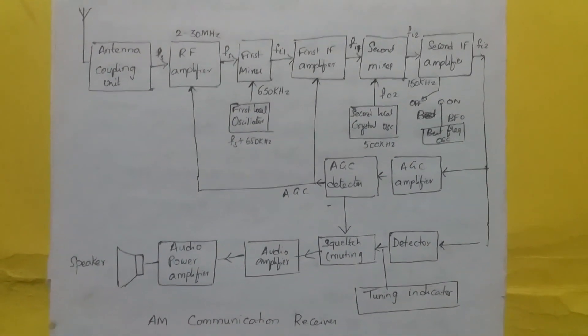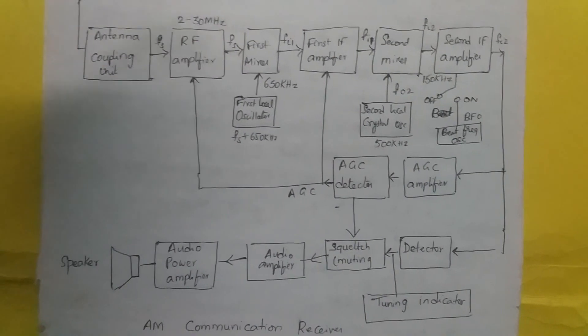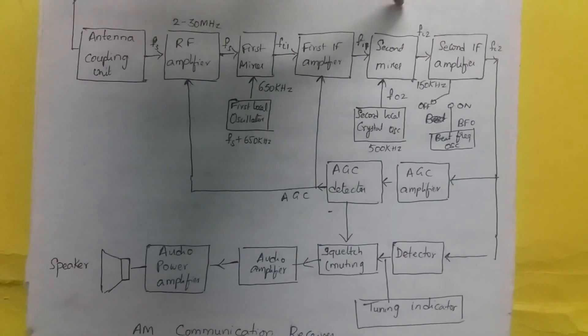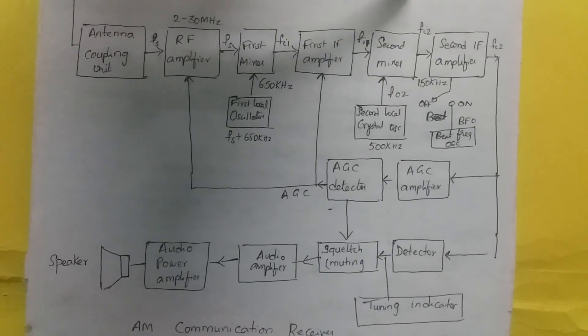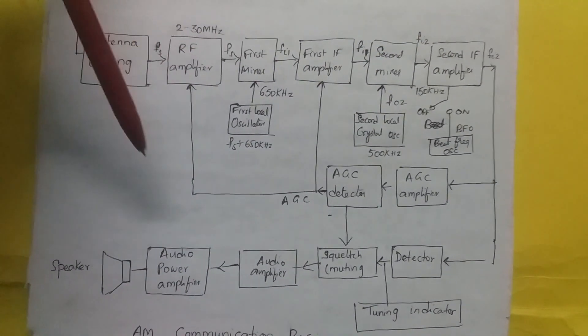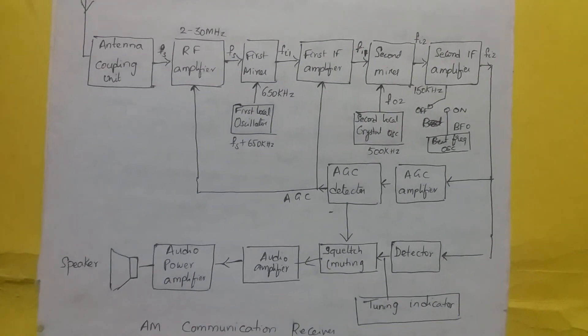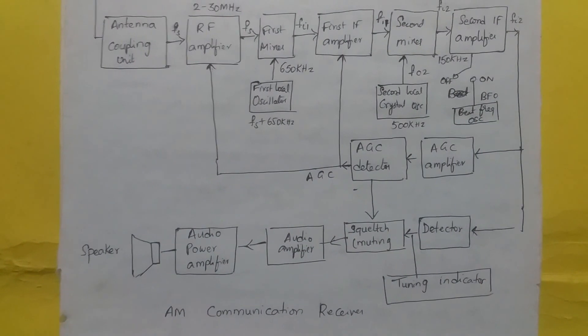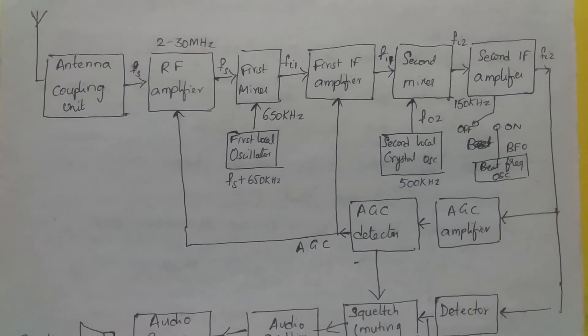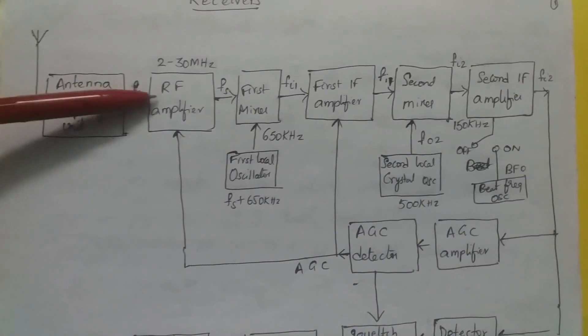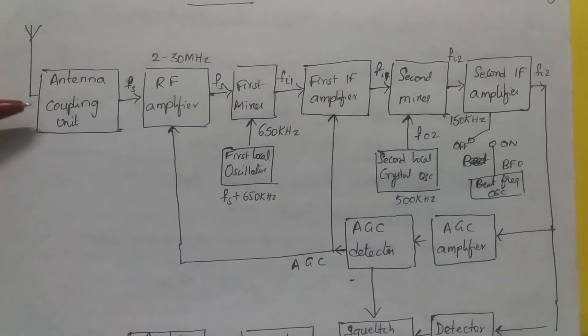Now let's have a look at the receiver part. Here is a communication receiver with two IF stages. First IF stage converts it to 650 kHz signal and the second IF stage converts it to 150 kHz signal. Such a communication receiver with two mixers are called double conversion circuit and triple detection circuit. The signal received at the antenna is coupled to the RF amplifier using the antenna coupling unit.